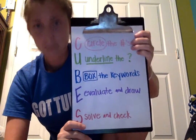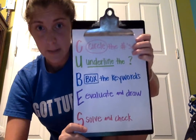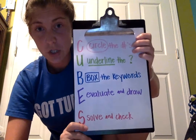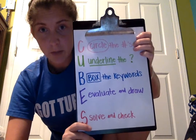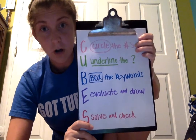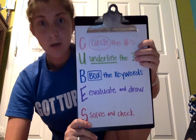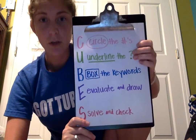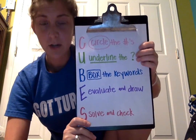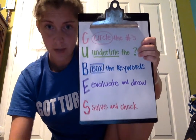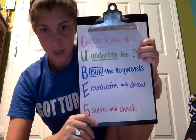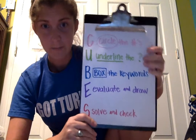The C means to circle the numbers — you're going to circle all of your numbers in your problem. The U is to underline the question — you're going to underline what that question is.